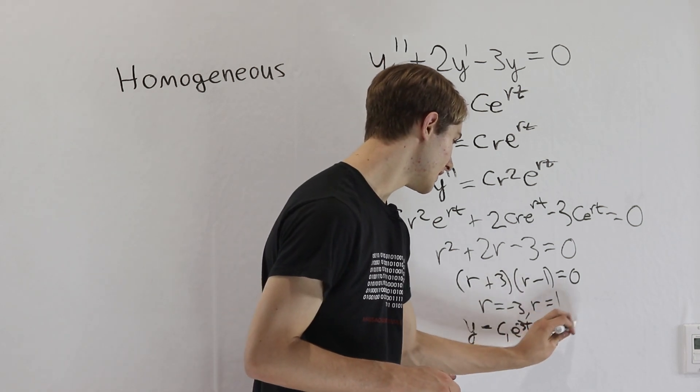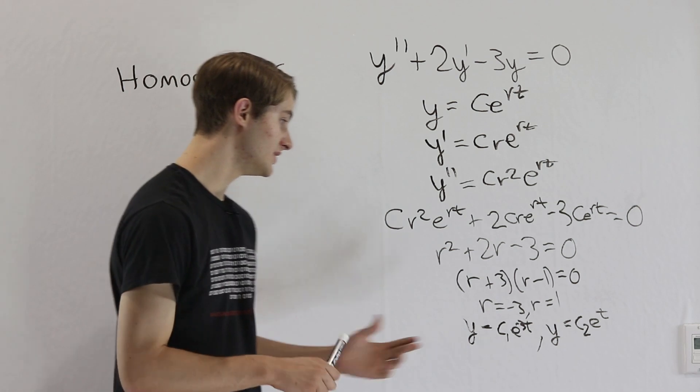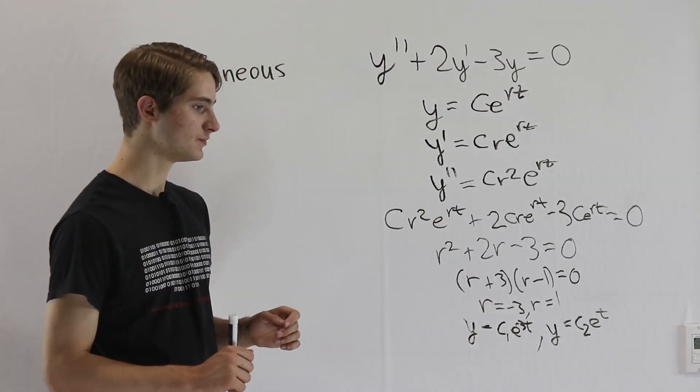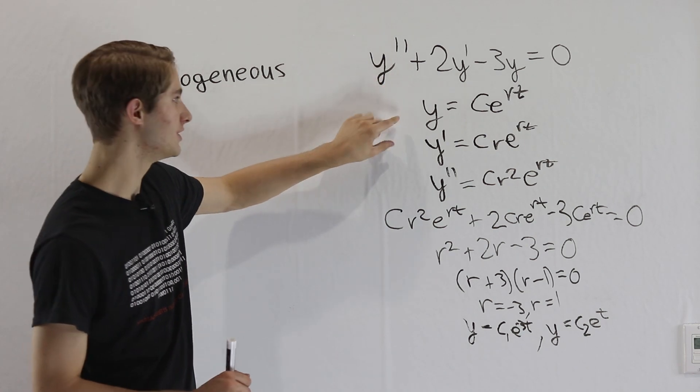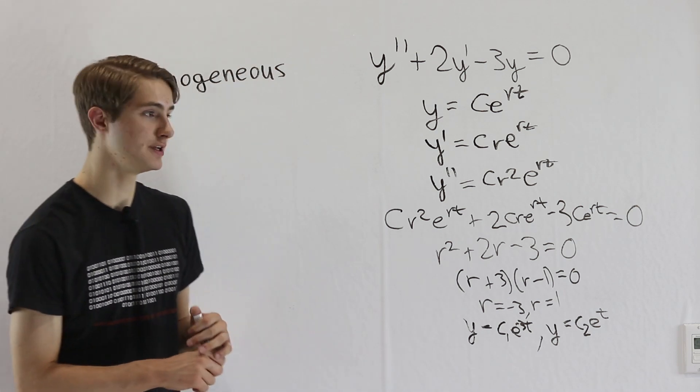And then if we also have c2, e to the t, e to the 1t, then these two will both be solutions to the differential equation. So we started out with one function here, y equals c e to the rt. But now for some reason we've ended up with two down here.